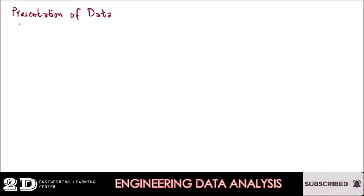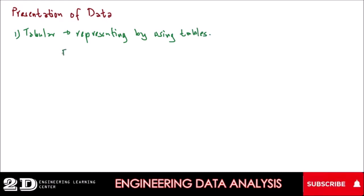So there are two types of ways to present data. First is tabular, representing data by using tables. The most common example of this is the frequency distribution table.